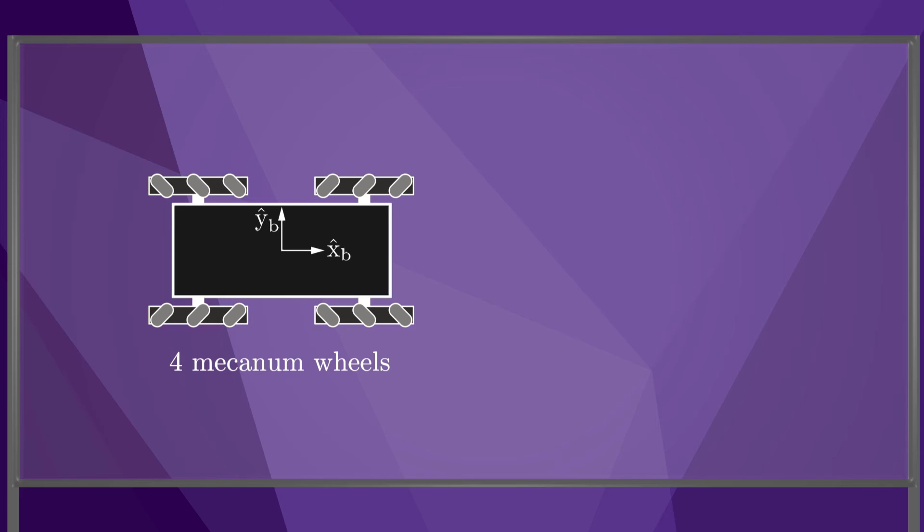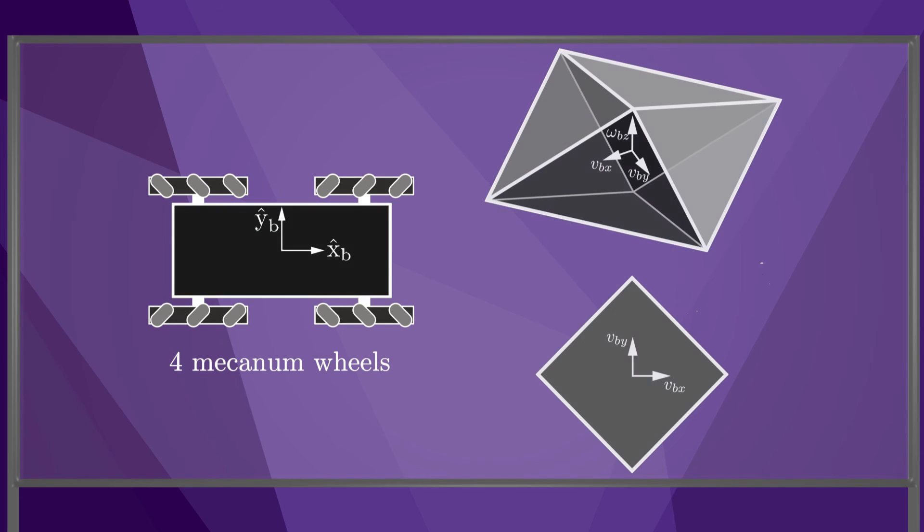For the robot with four mecanum wheels, the twist limits are described as an eight-sided polyhedron. The intersection of this polyhedron with the plane of zero angular velocity is a square.